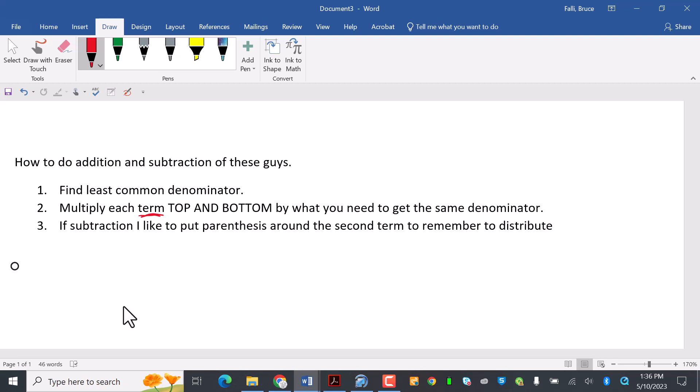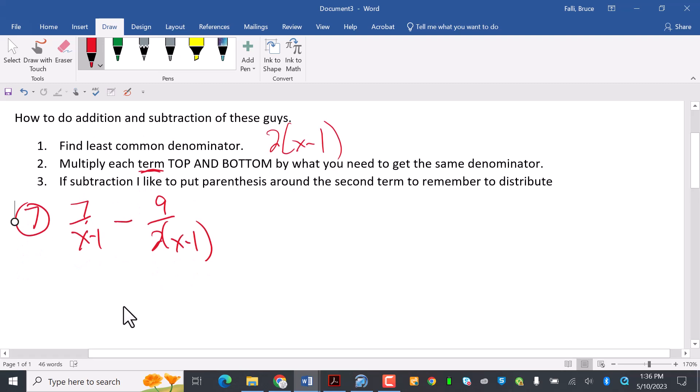I'm going to do, for example, number seven. I'll do all of these, but I'm going to do them in a weird order. So if I have 7 over x minus 1 minus 9 over 2x minus 1, find the least common denominator. Do you see how my least common denominator here is going to be 2 times x minus 1? So this one's missing the two, so I'm going to multiply top and bottom by two.